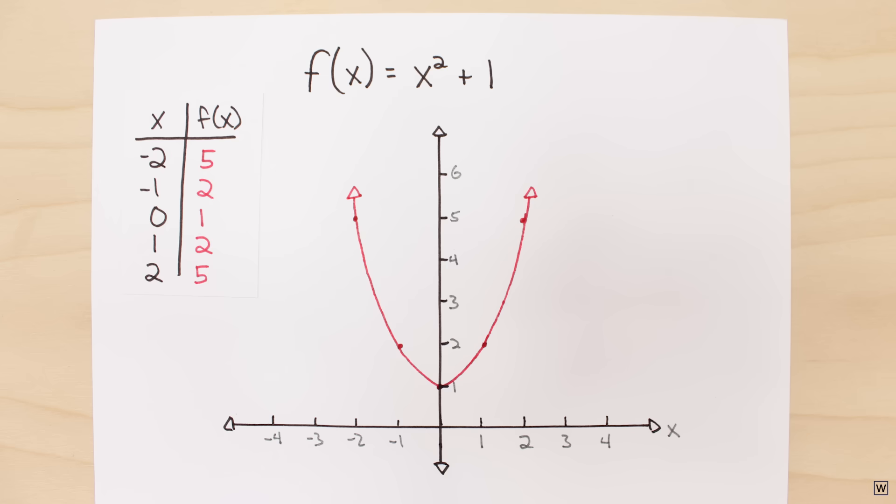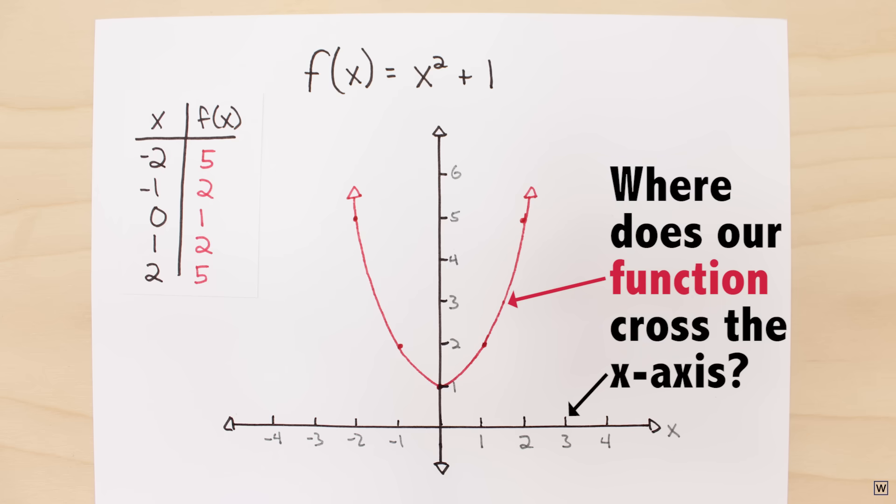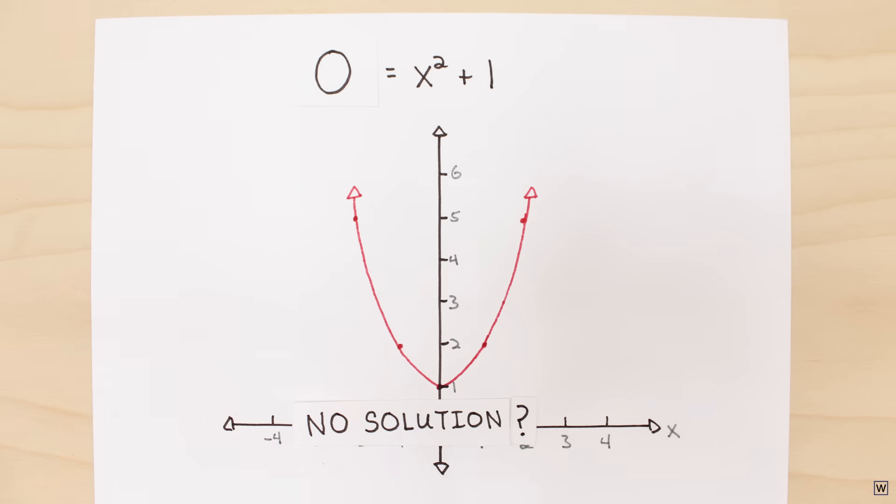On our plot, this should be where the function crosses the x-axis. As we can see, our parabola actually never crosses the x-axis. So according to our plot, there are no solutions to the equation x squared plus 1 is equal to 0.